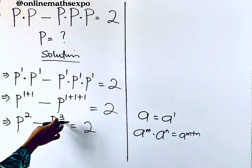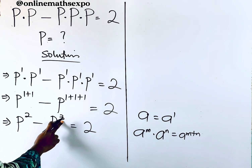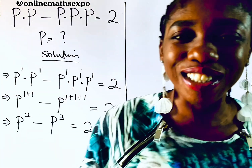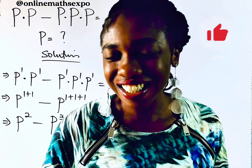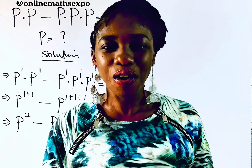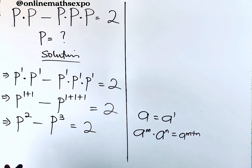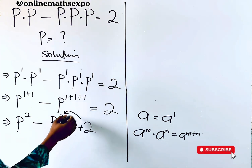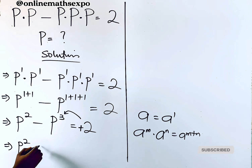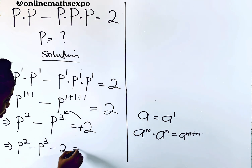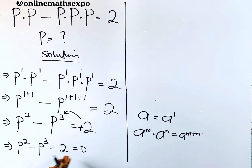This has led us to a degree three polynomial. The highest power of p is three. Now let me teach you how to solve this degree three polynomial equation using the long division method. To use it, we first take the 2 to the left side — since it is positive we subtract — giving us p² minus p³ minus 2 equals zero. We rearrange so the highest power comes first.